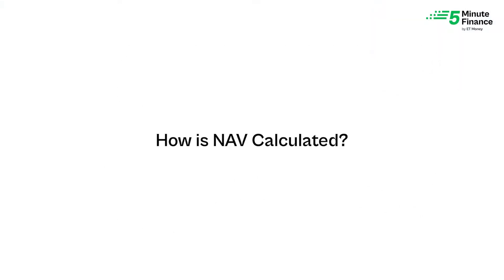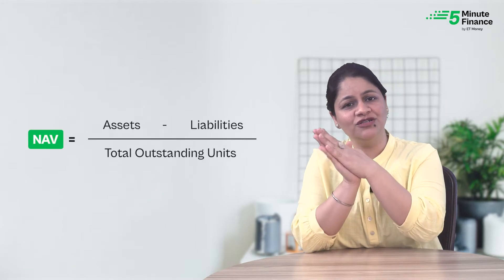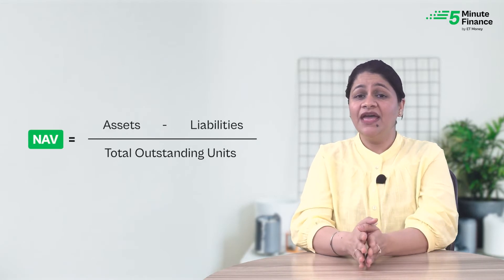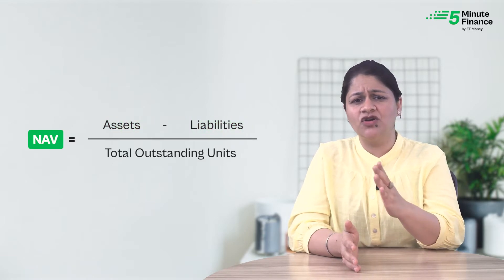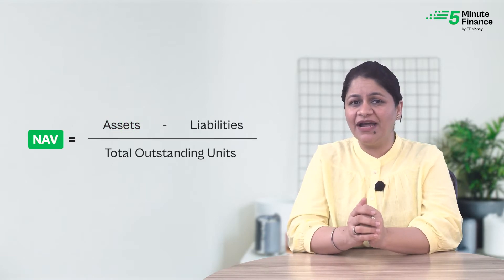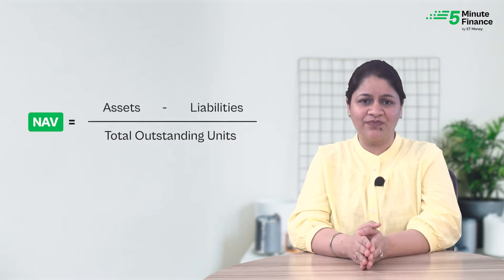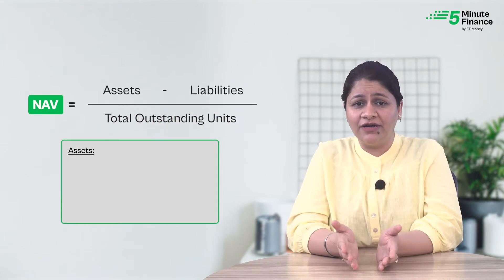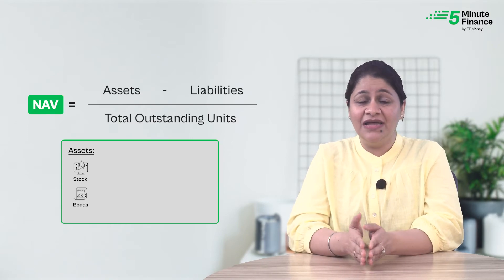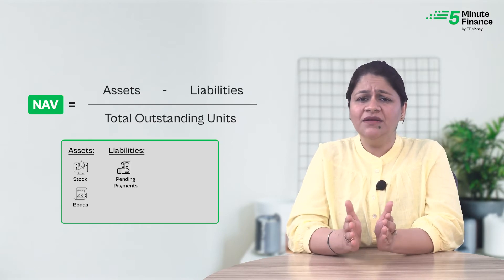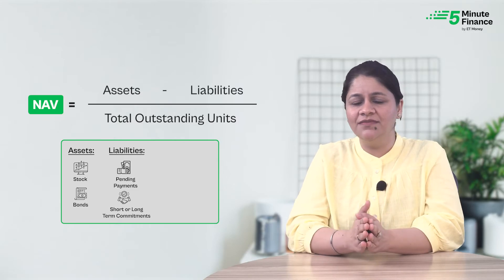Now let's jump on to see how NAV is calculated. NAV of a mutual fund is equal to assets minus liabilities or expenses, divided by the total outstanding units. Assets means the securities like stocks and bonds where the mutual fund has invested. Liabilities means pending payments or any short or long-term commitments.